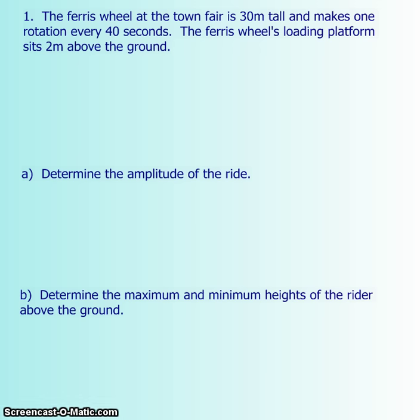We have a Ferris wheel at the town fair, and it's 30 meters tall. It makes one rotation every 40 seconds, and the Ferris wheel's loading platform is 2 meters above the ground. So what I'm going to do is I'm just going to draw a very simple picture first. So there's a wheel, and then maybe we have a loading platform that's about 2 meters tall. And since you know that the diameter is 30, I'm just going to split that into 15 and 15. So this is just a rough diagram. And you know that you're going to get on, and it's going to take 40 seconds to spin all the way around.